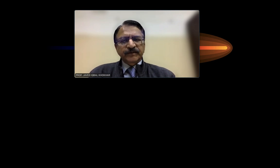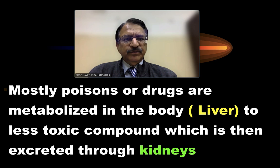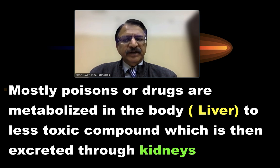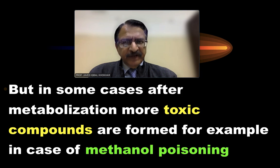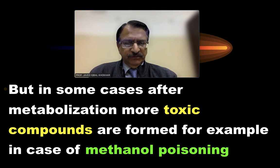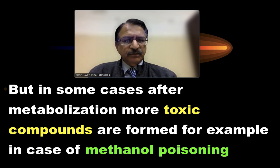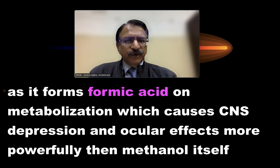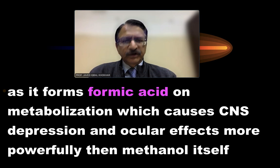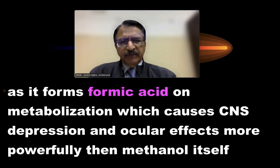Regarding metabolism in the body, most poisons and drugs are metabolized mainly in the liver to make them less toxic, and are then excreted through the kidneys. However, in some cases metabolism produces more toxic compounds. For example, methanol is metabolized into formic acid, which causes more powerful central nervous system depression and ocular effects than methanol itself.